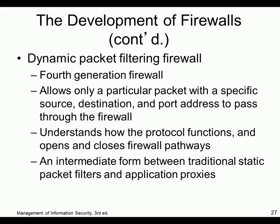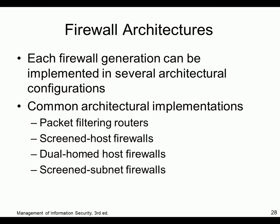Dynamic packet filtering is the fourth generation. It allows only particular packets with specified source, destination, and ports to pass through. It understands how protocols work, so you can't use them for other traffic. It acts as an intermediary between application and packet — like a proxy combined with regular packet filtering.